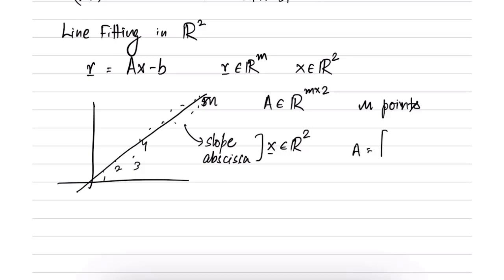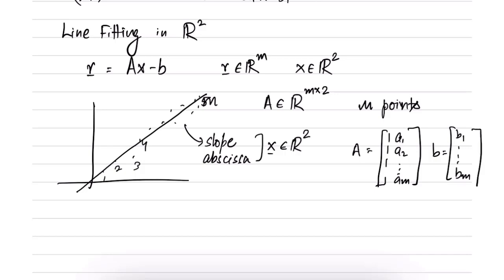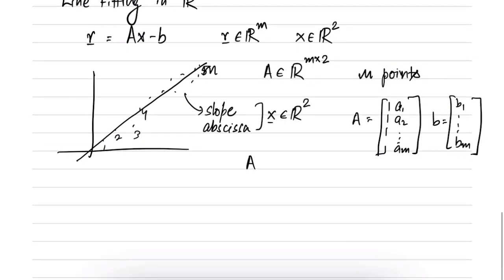Without loss of generality, we generally take A as containing all ones in the first column, because you can always scale the line and it would still remain a line. The second column would be the data values A_2 to A_m, and there would be parameters b_1 to b_m. Together, Ax minus b gives the residuals. For a given line, A_i transpose x minus b_i corresponds to the residual for the ith point.